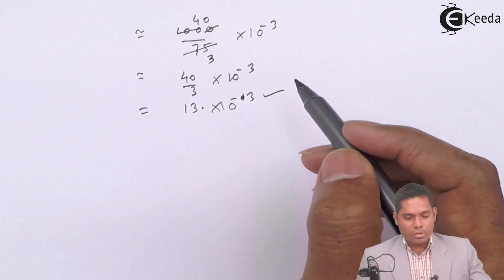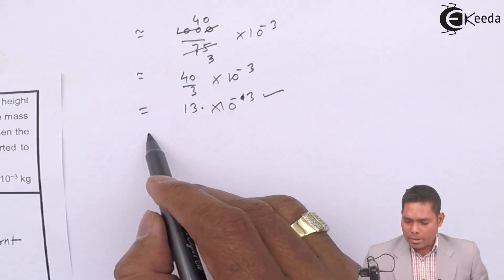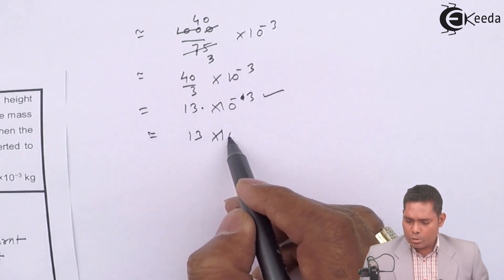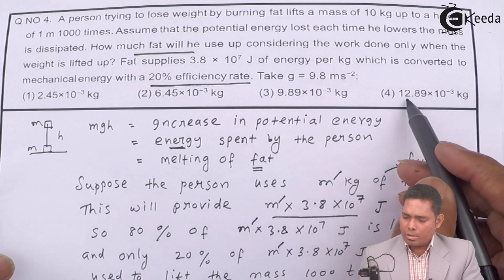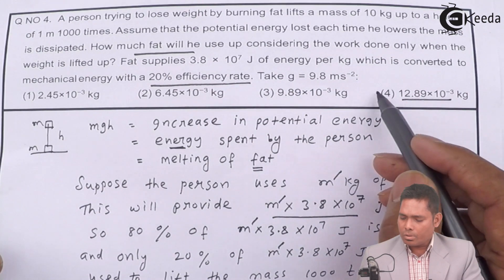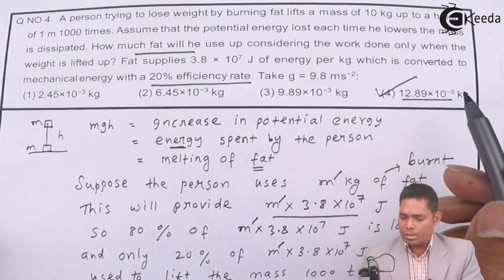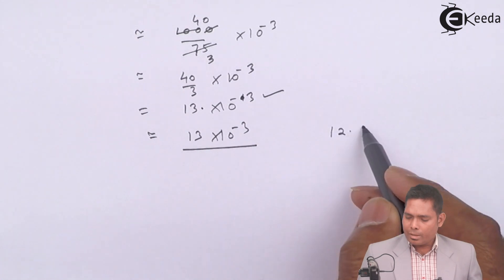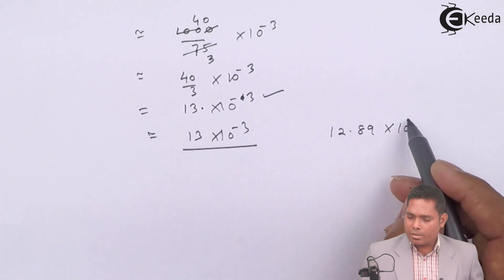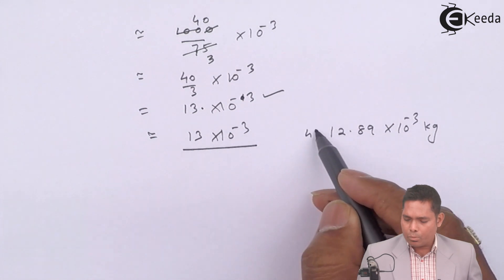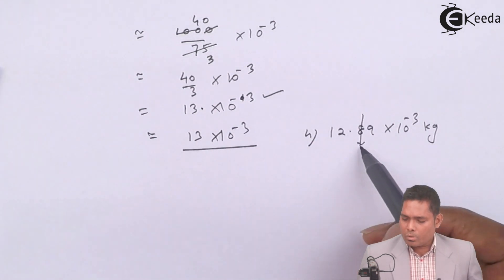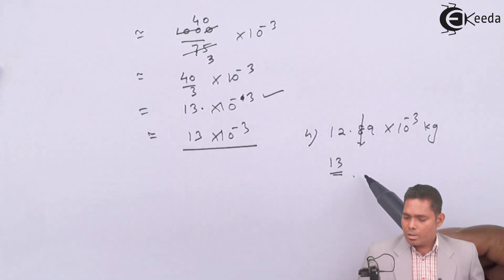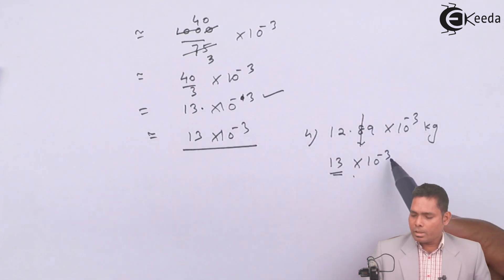If I see the option, by this way I am getting around 13×10⁻³. If I see the option, then this is near to option 4. So option number 4 is correct. Here it is 12.89×10⁻³ kilogram. So this way, if I round off this, then also I will get 13. So 13×10⁻³ kilogram. So this way we save time.